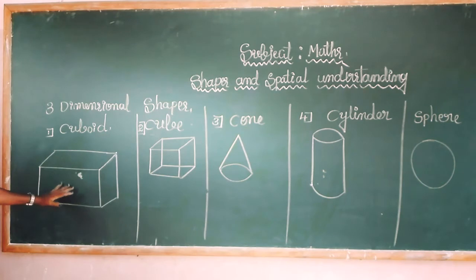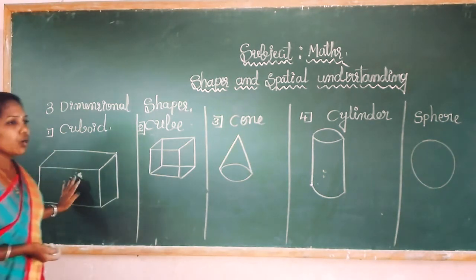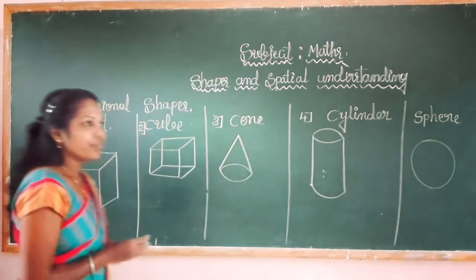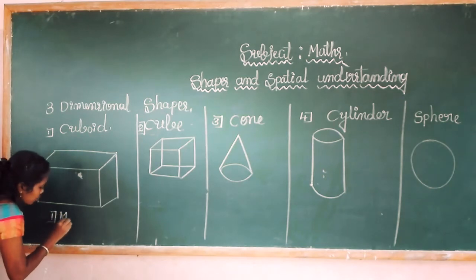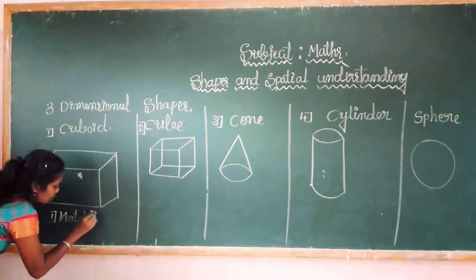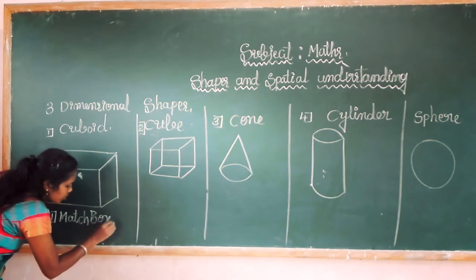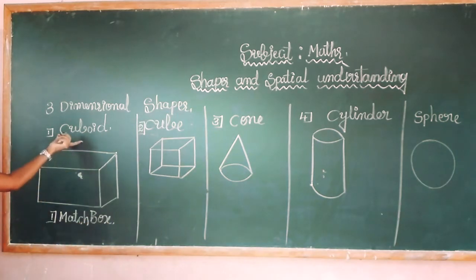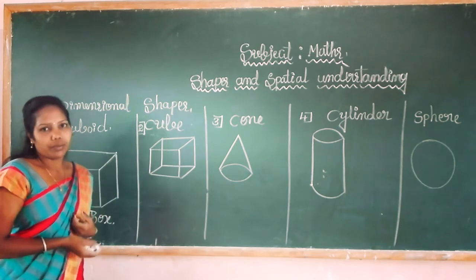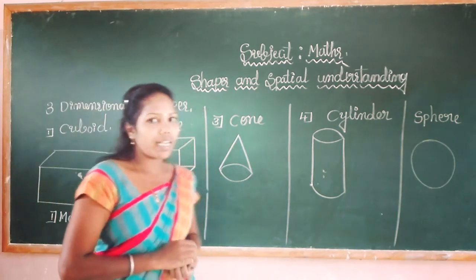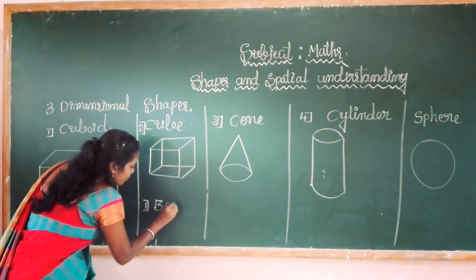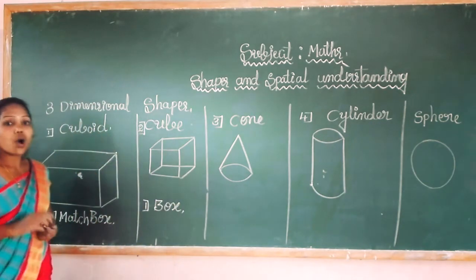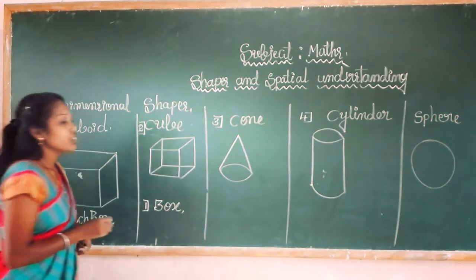What are the similar objects for 3D shapes? Especially for cuboid — what is the similar object? First one is matchbox. Matchbox is similar to the cuboid shape. Then for cube, give me more examples for the cube shape — a box and also dice.